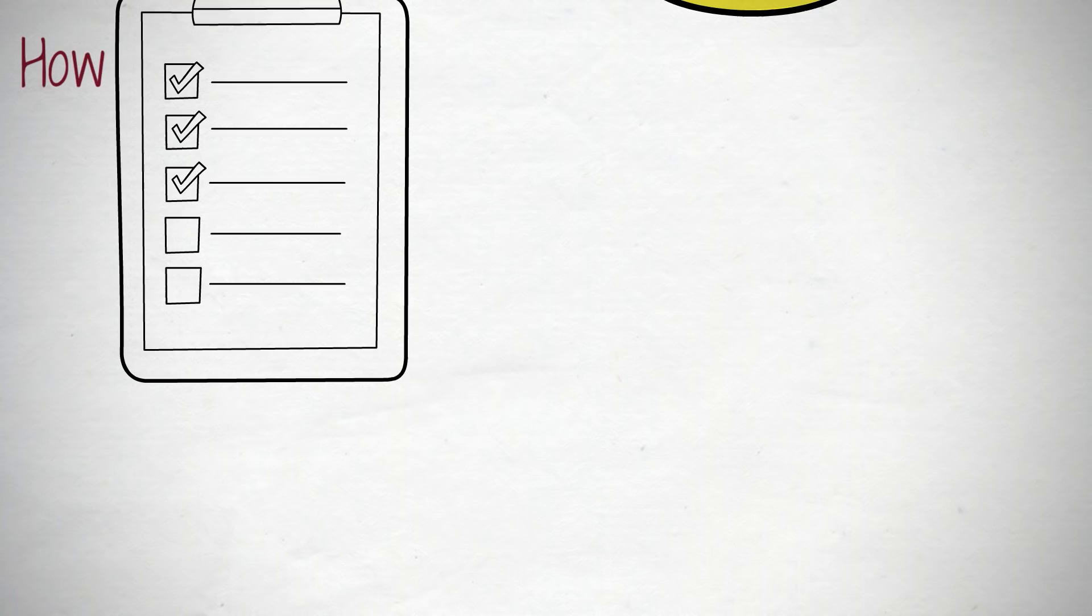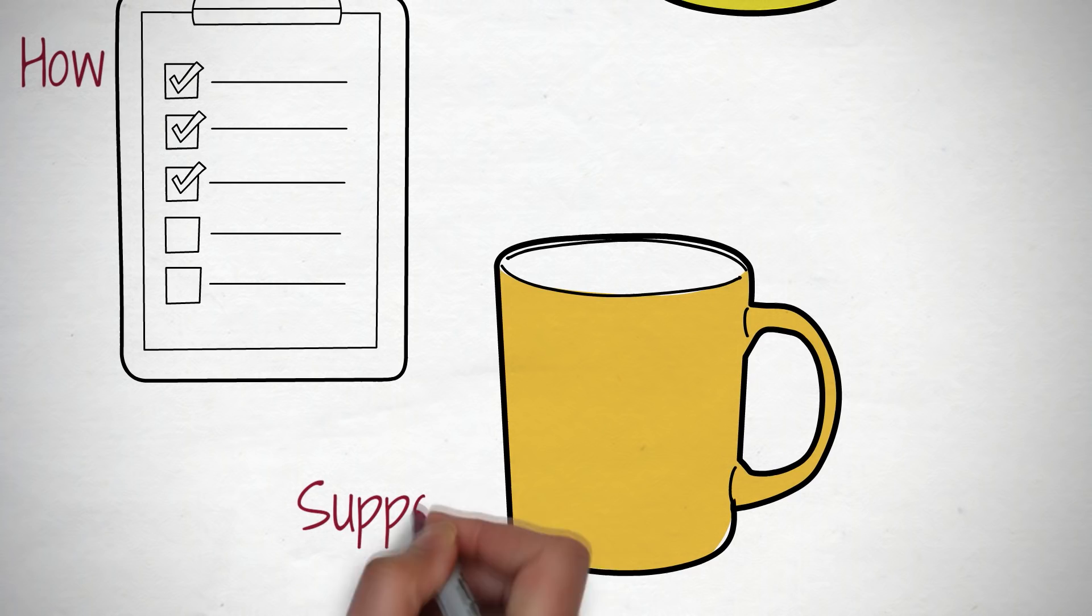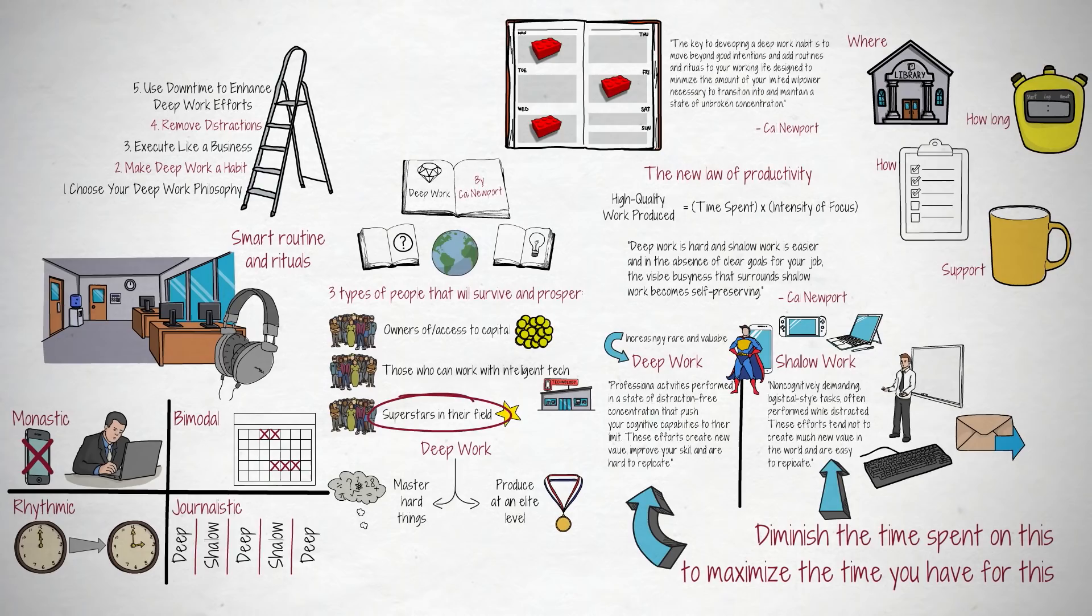Support. To maximize success, you need to support your efforts to go deep. For example, the ritual might specify that you start with a cup of good coffee, or make sure you have access to enough food of the right type to maintain energy.